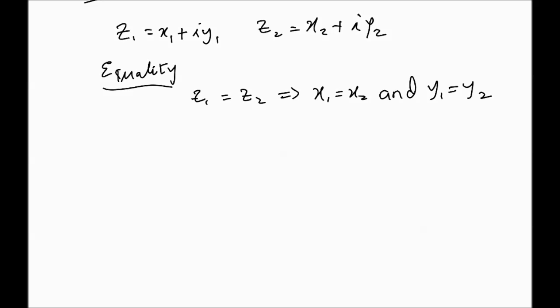So, when two complex numbers are equal, their real parts and imaginary parts are equal. That's necessary. It's necessary that their real parts and their imaginary parts be equal.